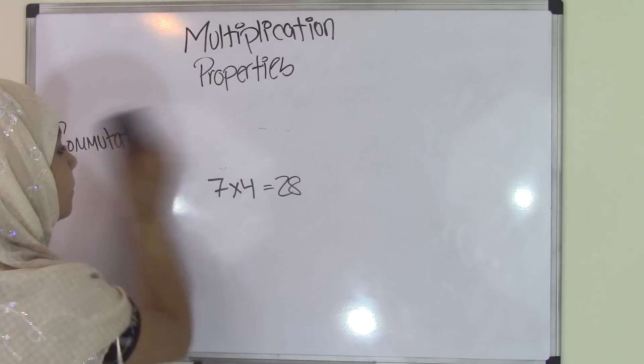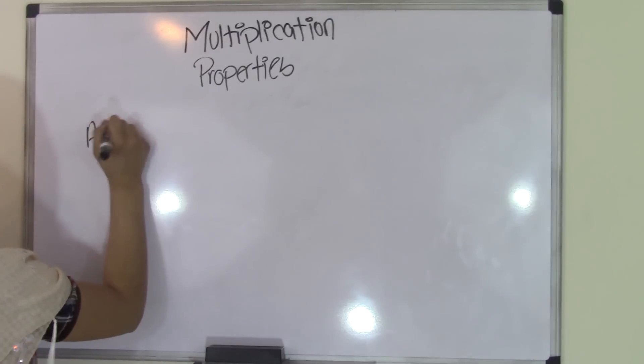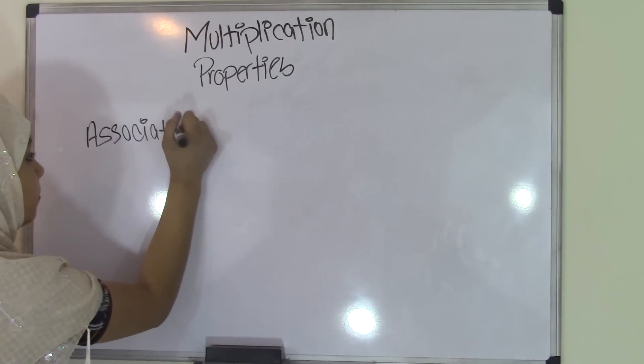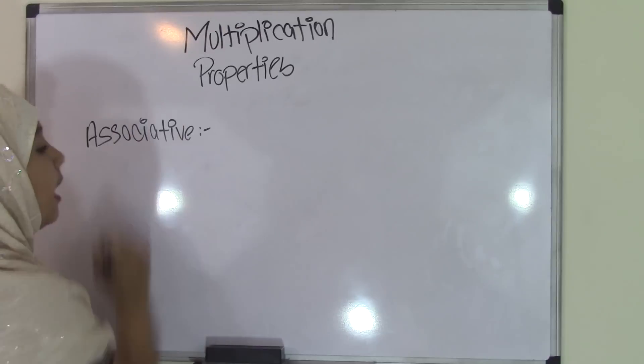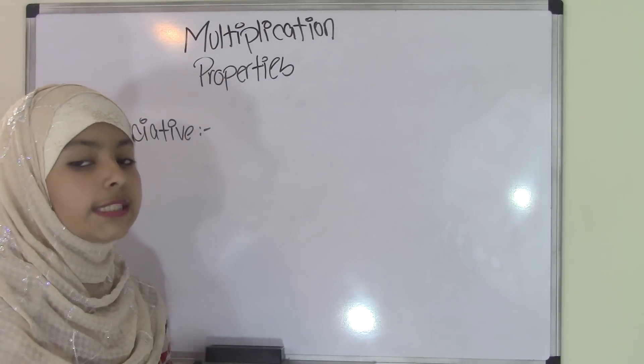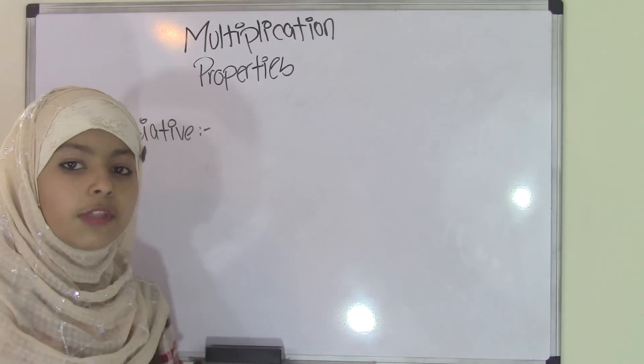The next property of multiplication is the associative property. The associative property is pretty much like the commutative property, except in associative property, you have three numbers, and two of them are in parentheses.